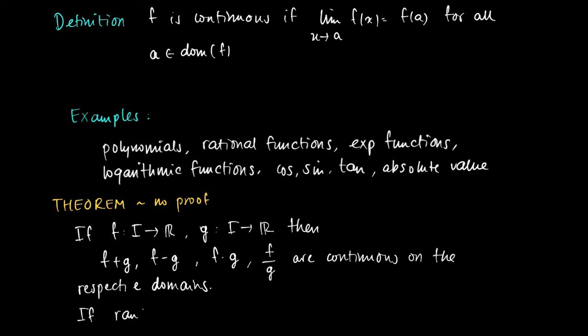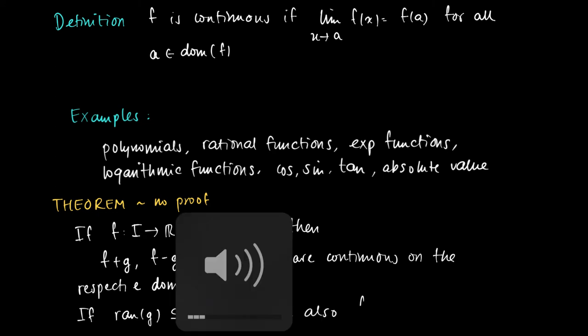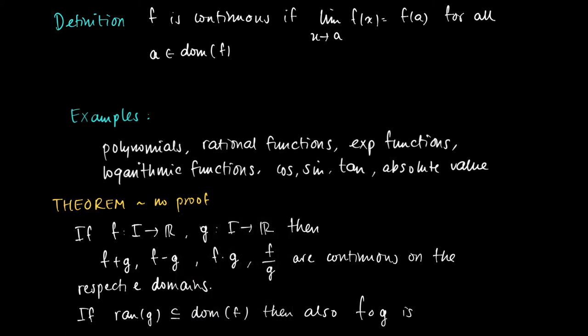Then what we get is that f composed with g is also continuous. So basically, if we make a composition of two continuous functions, then what we're left with is a continuous function.